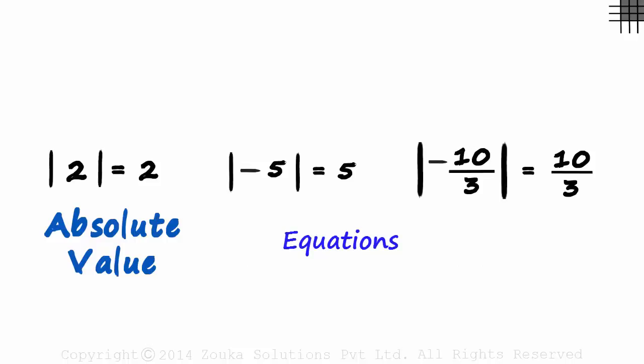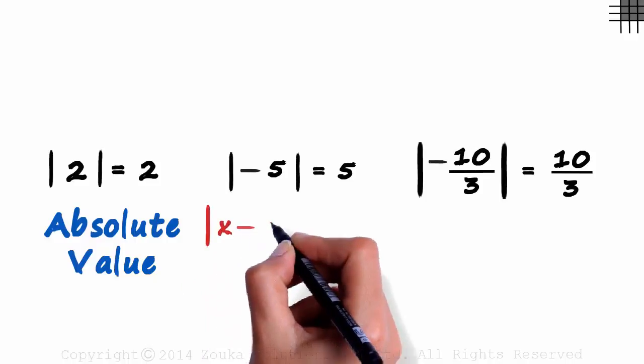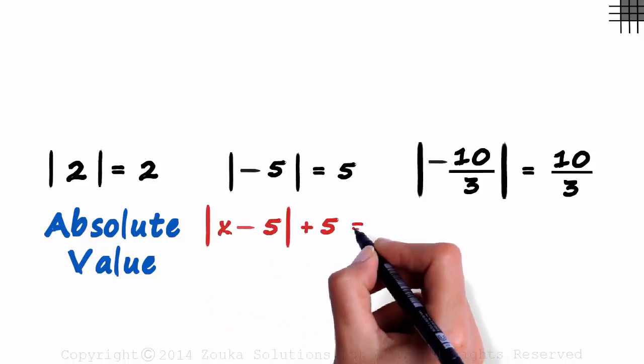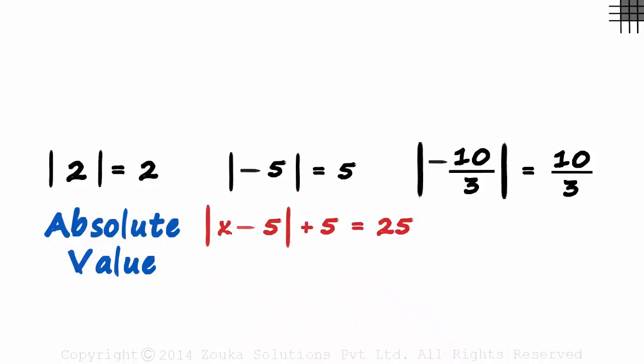But is this concept of absolute value as easy when it's applied to equations? Say we have something like absolute value of x minus 5 plus 5 is equal to 25. How do we find the value of x here?